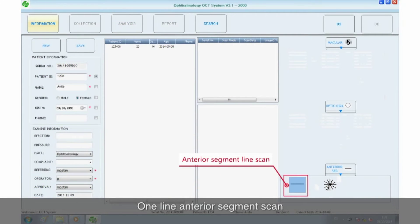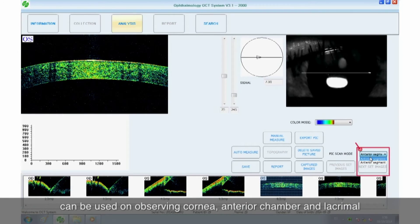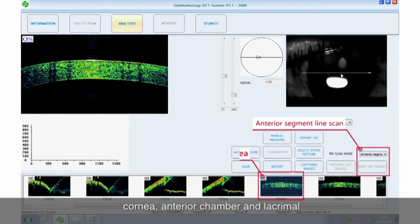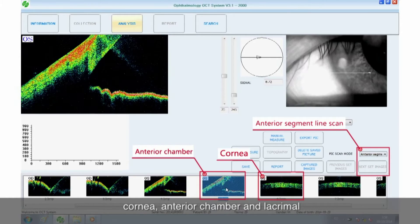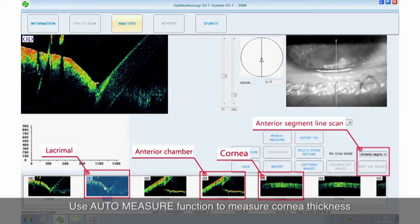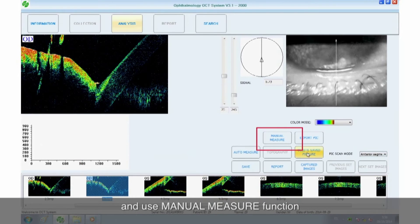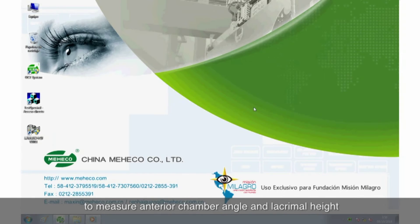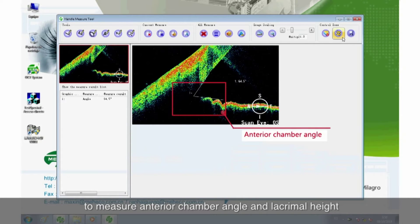One line anterior segment scan can be used on observing cornea, anterior chamber and lacrimal. Use auto measure function to measure cornea thickness and use manual measure function to measure anterior chamber angle and lacrimal height.